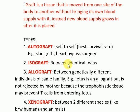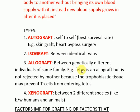Then there is the isograft, which is between identical twins. When two individuals are identical twins, grafting taken from one individual to the other is called an isograft.